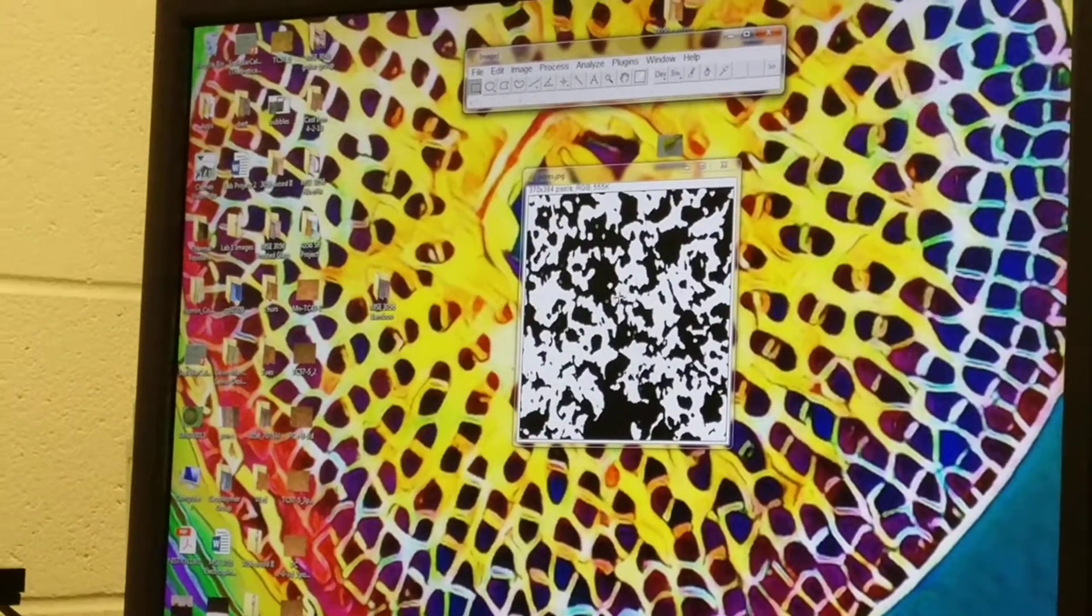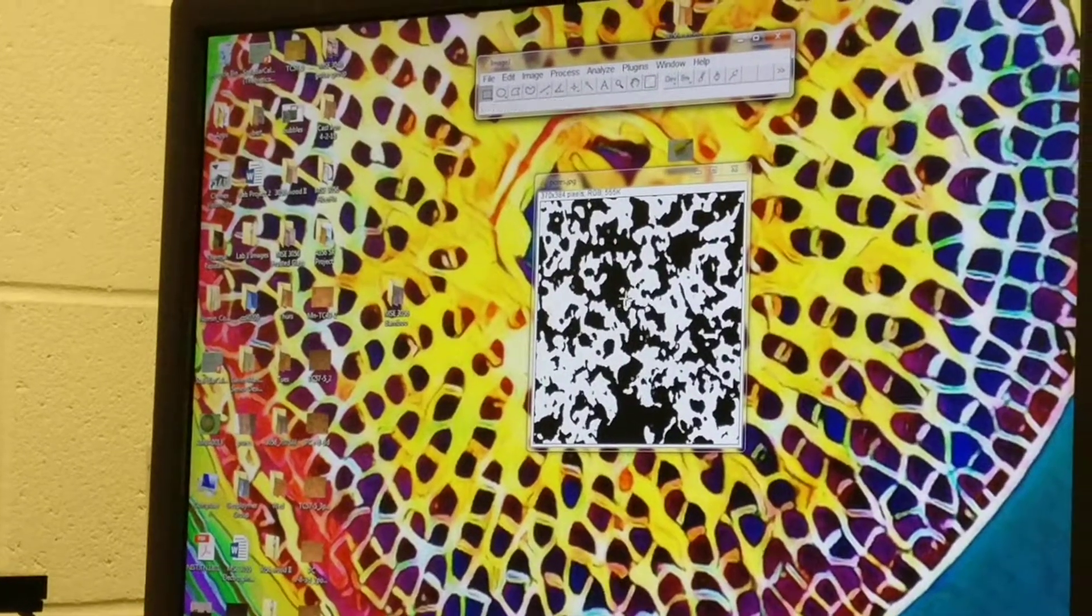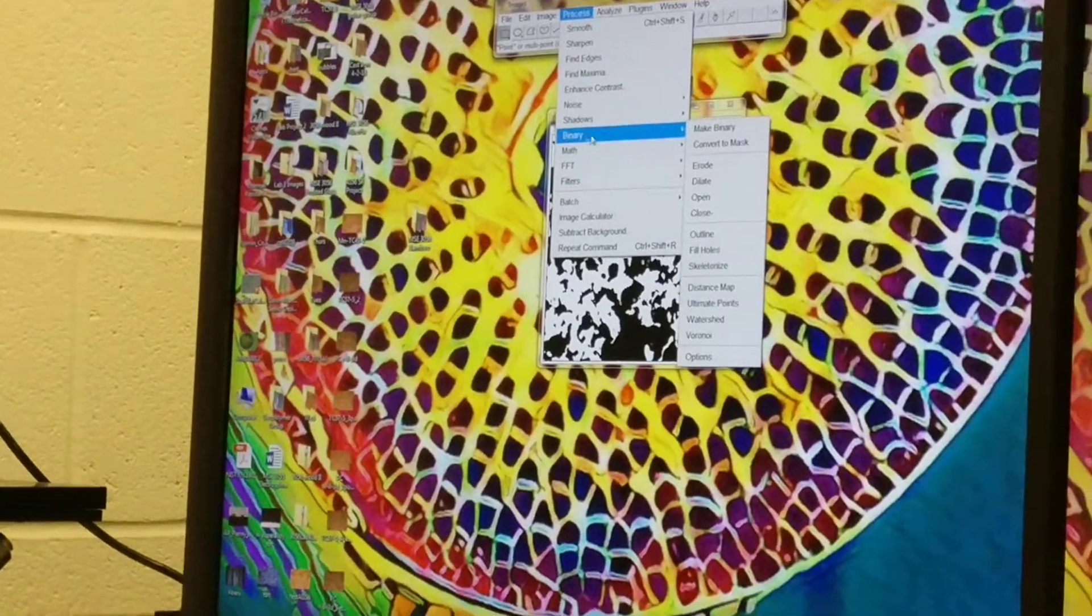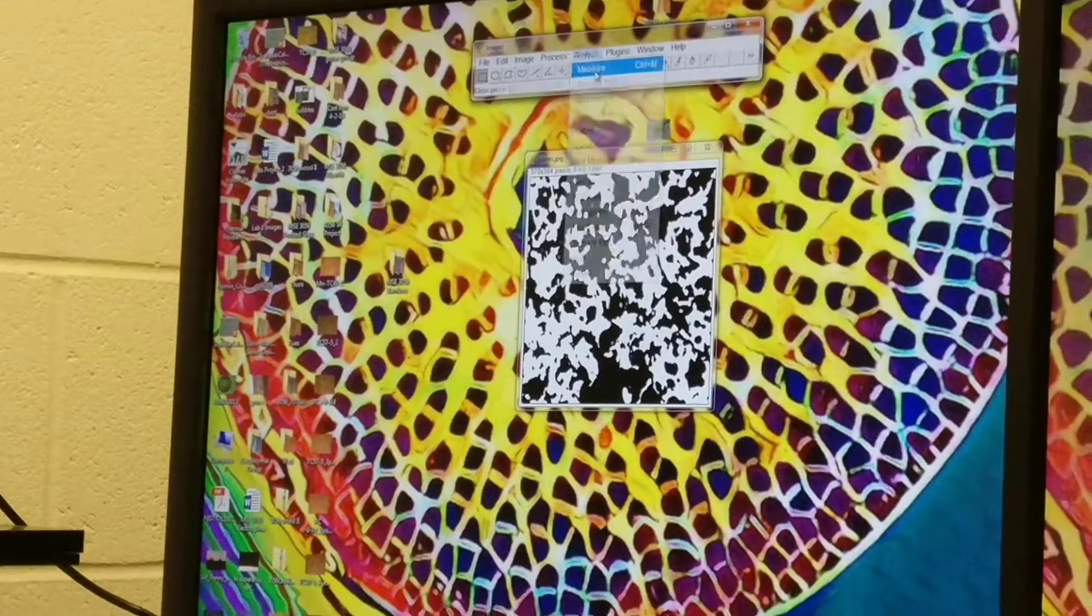The next thing we need to do is make this a binary image so that it can calculate the area of the black part. We're going to do process, binary, make binary. Then we're going to click analyze and measure.